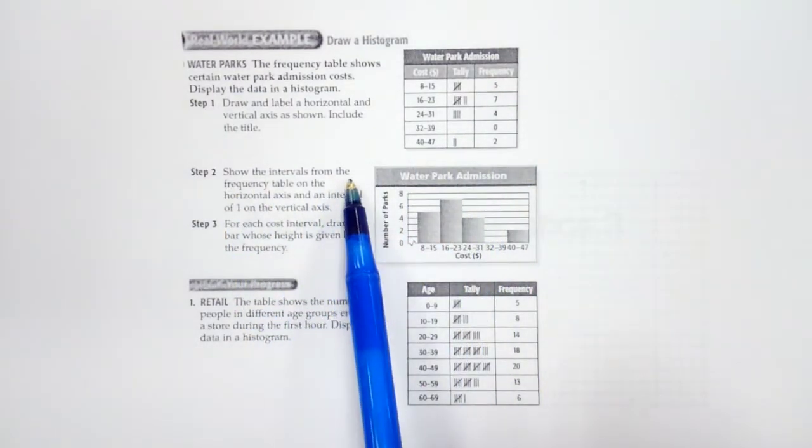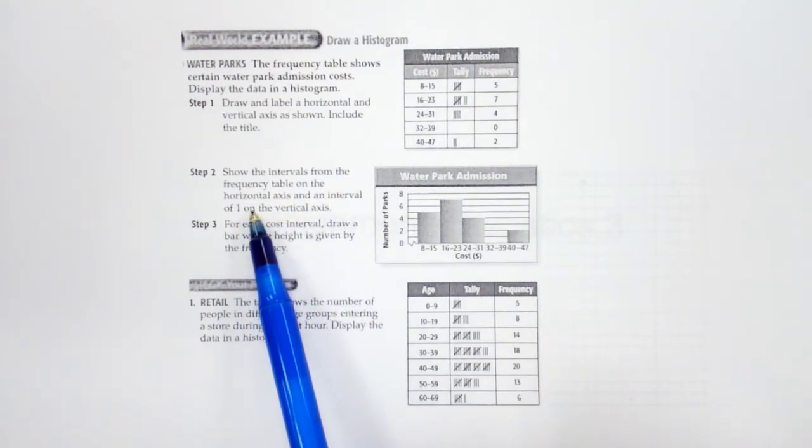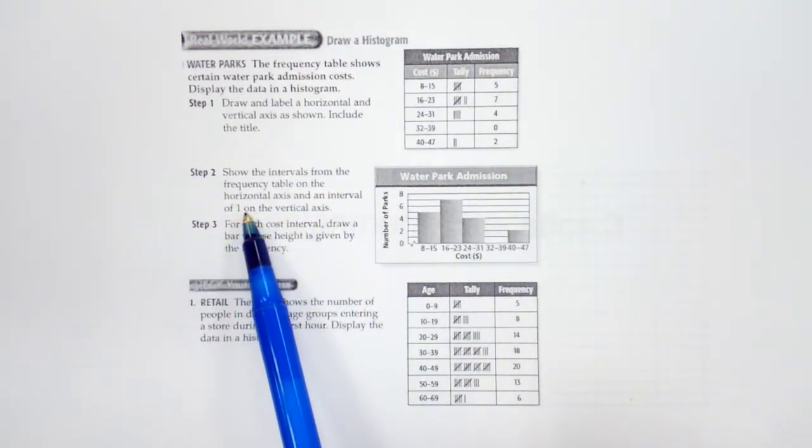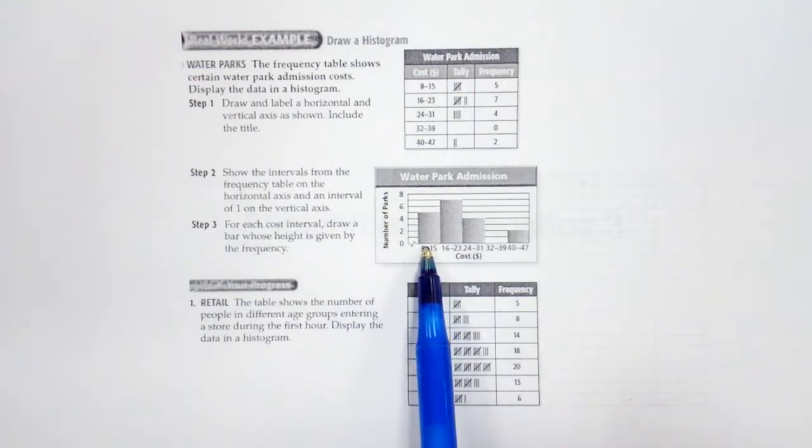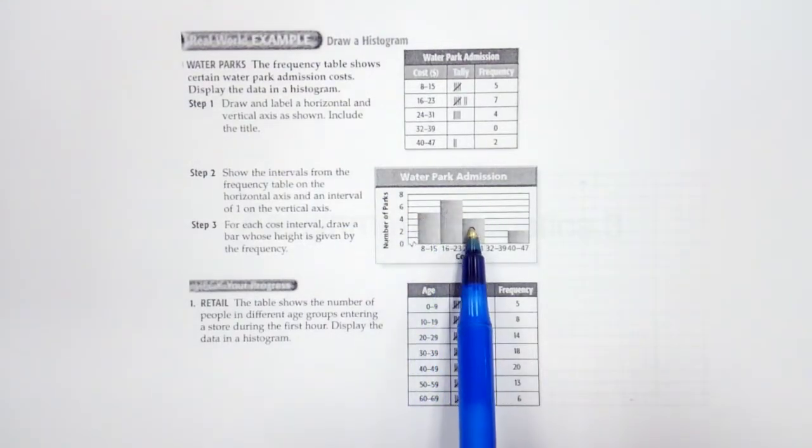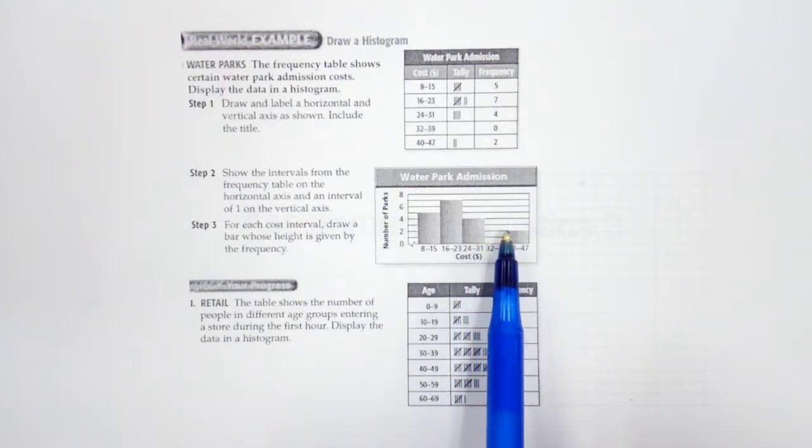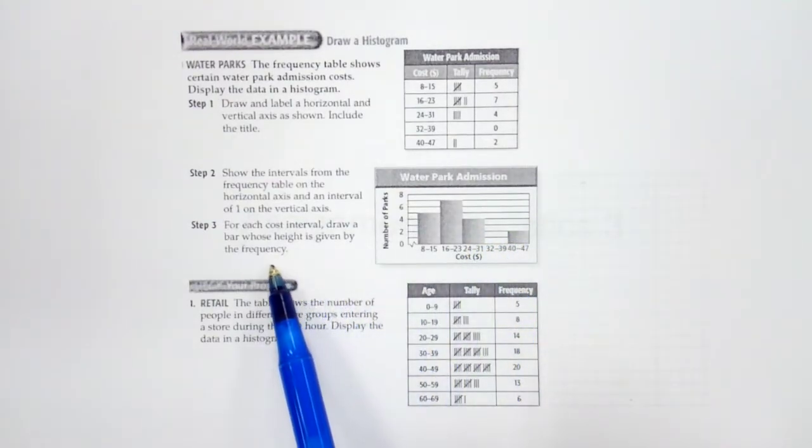Okay, show the interval from the frequency table on the horizontal axis and interval of 1 on the vertical axis. So our horizontal here, vertical here, so we have 5, 7, 4, 0, and 2.